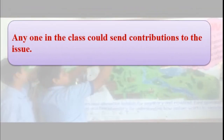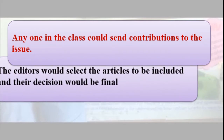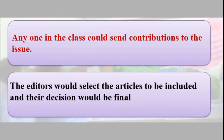We have four teams for four issues, and each team has seven students. The rest of the students can also help these four teams — anyone in the class could send contributions to the issue. If they know any information about the subject of that team, they can help. The four teams each have an editor, and the editors would select the articles to be included. The final decision of the editor is whether to include an article in the subject or not.